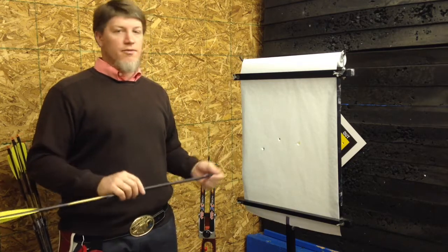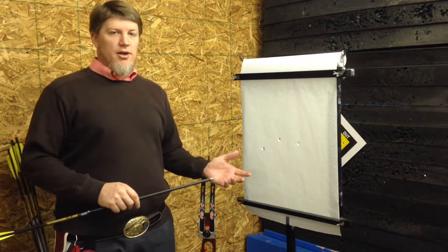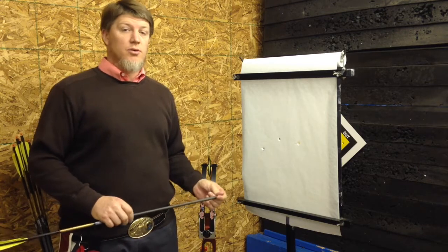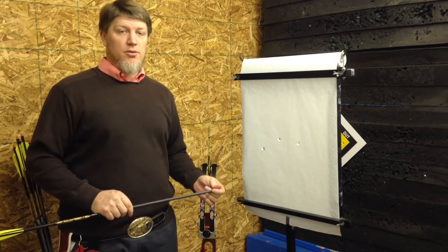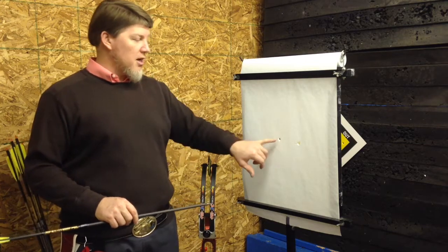Making sure that the arrow is flying properly. I'm not going to go into a lot of detail on how to adjust if you're getting a paper tear. The easiest place to go to is Goldtip, www.goldtip.com. They have a really easy chart to show you a high tear.